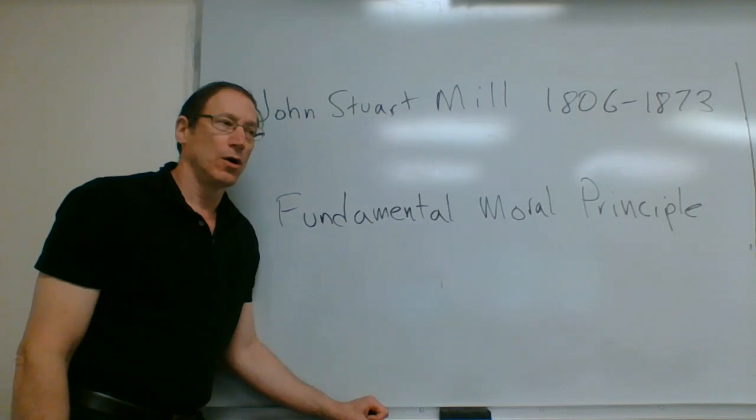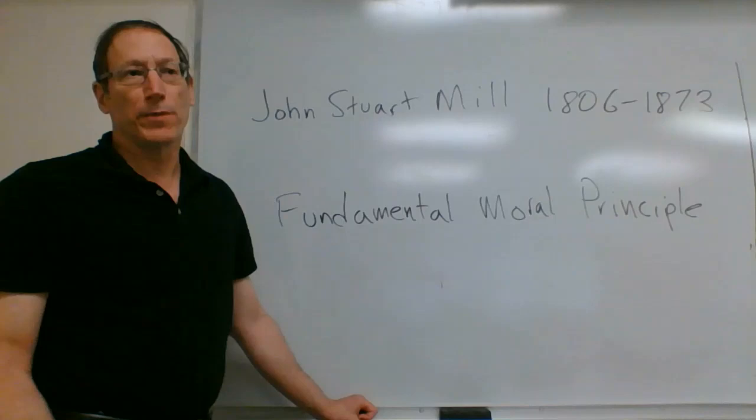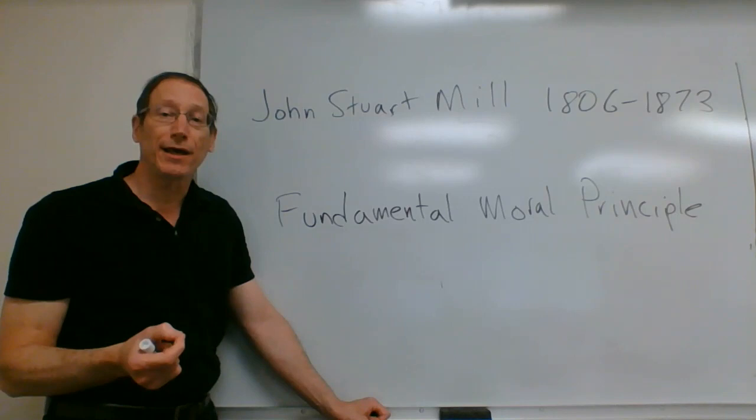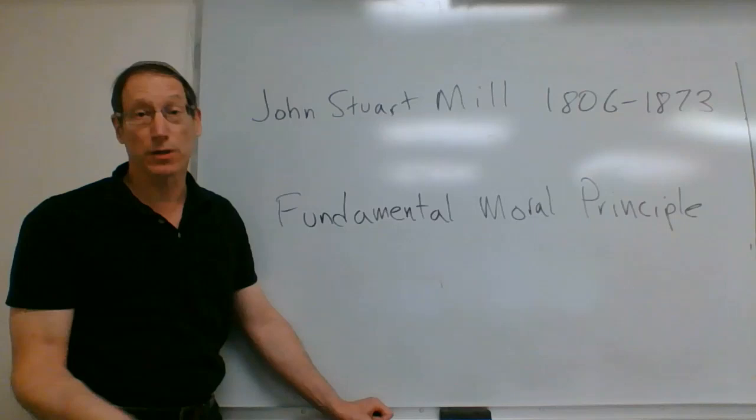Don't cheat — it is wrong to cheat. Or, for example, it is good to give charity, it is good to help people who are in distress. Those are what we might call moral rules. The idea of a fundamental moral principle is the idea that there's a single underlying rule which is in some way the basis of all the other moral rules that we might believe in, or that are true according to a given theory.